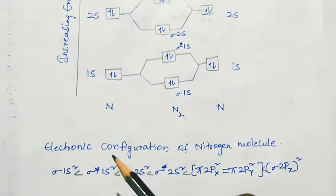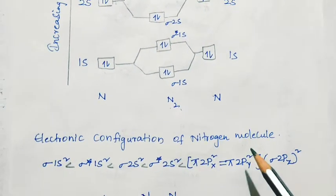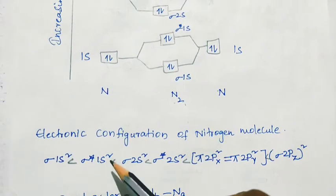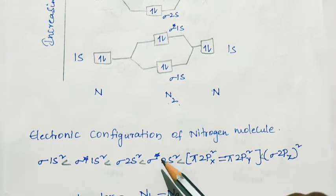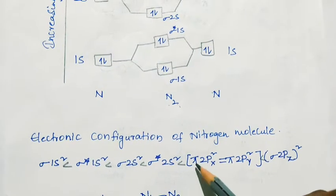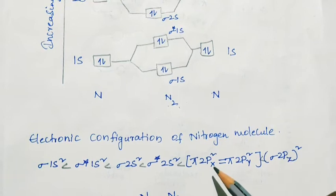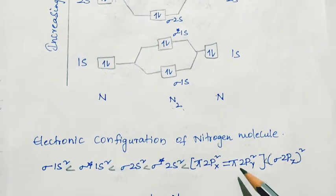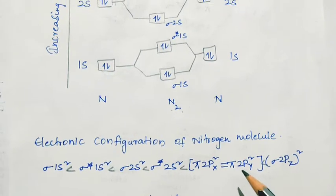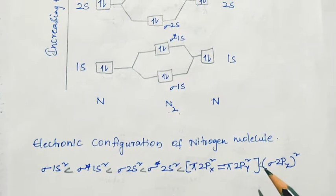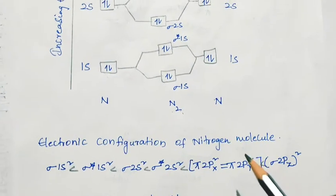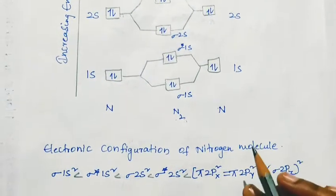The electronic configuration of the nitrogen molecule is: σ1s², σ*1s², σ2s², σ*2s², π2px², π2py², σ2pz². This is the electronic configuration — that is, the molecular orbital diagram of nitrogen.